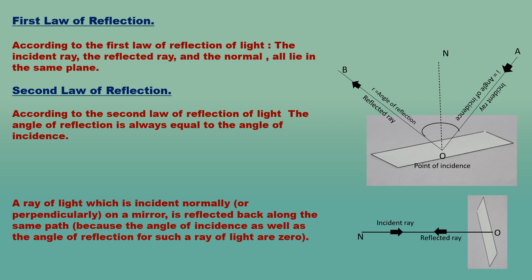What happens when a ray of light falls normally or perpendicularly on the surface of a mirror? If a ray of light is incident normally on a mirror, it means it is travelling along the normal to the mirror, so the angle of incidence is zero. Since the angle of incidence is zero, according to the law of reflection its angle of reflection will also be zero. This means that a ray of light incident normally on a mirror is reflected back along the same path.